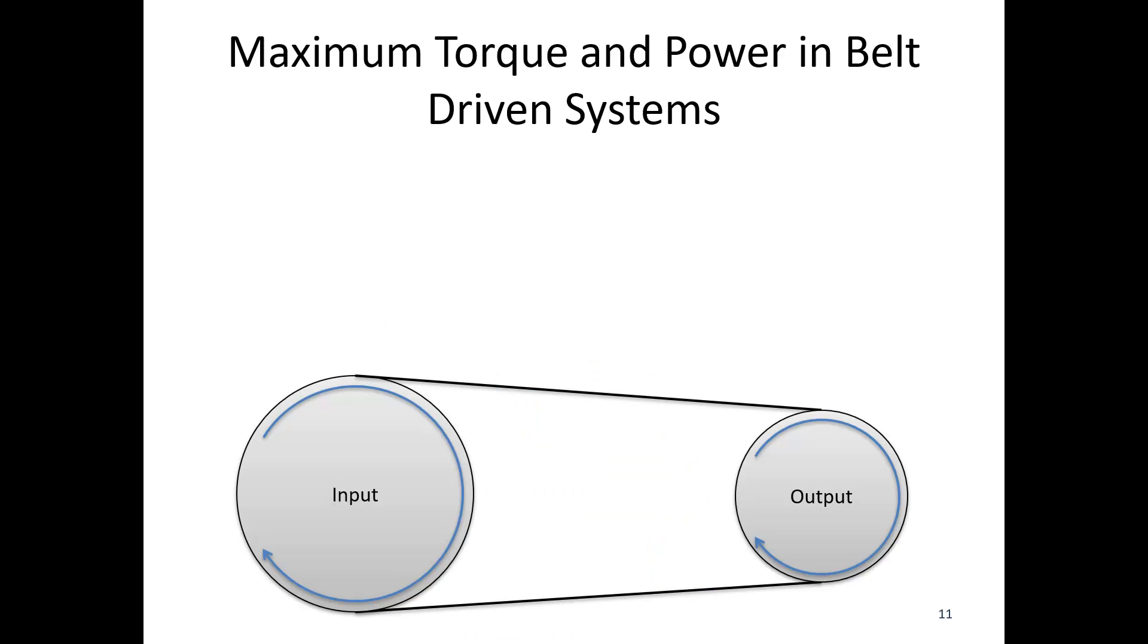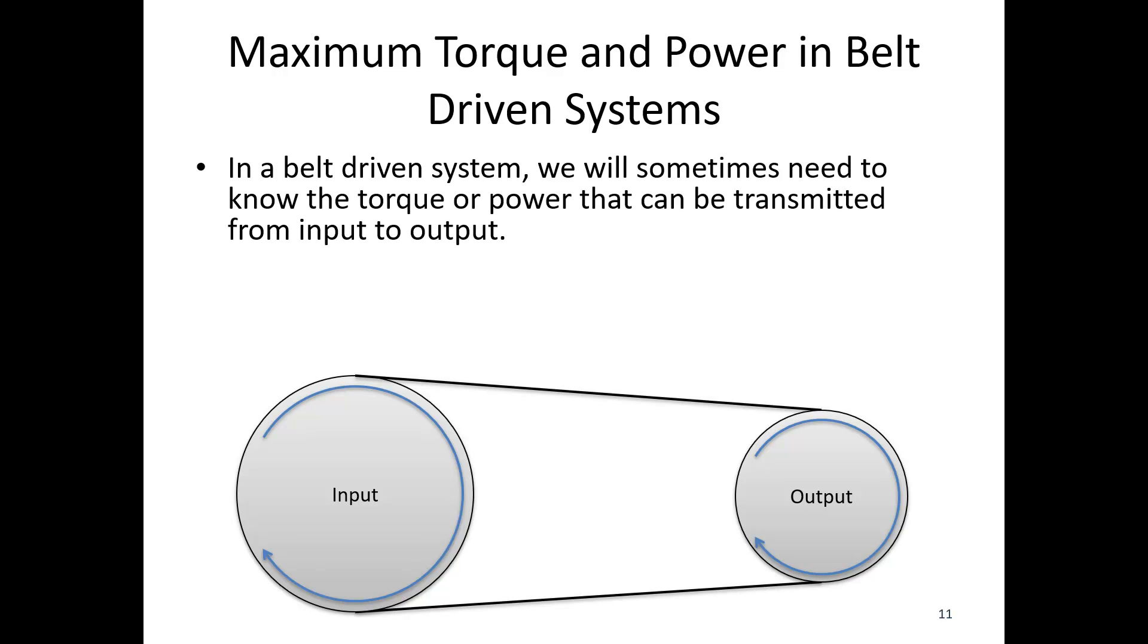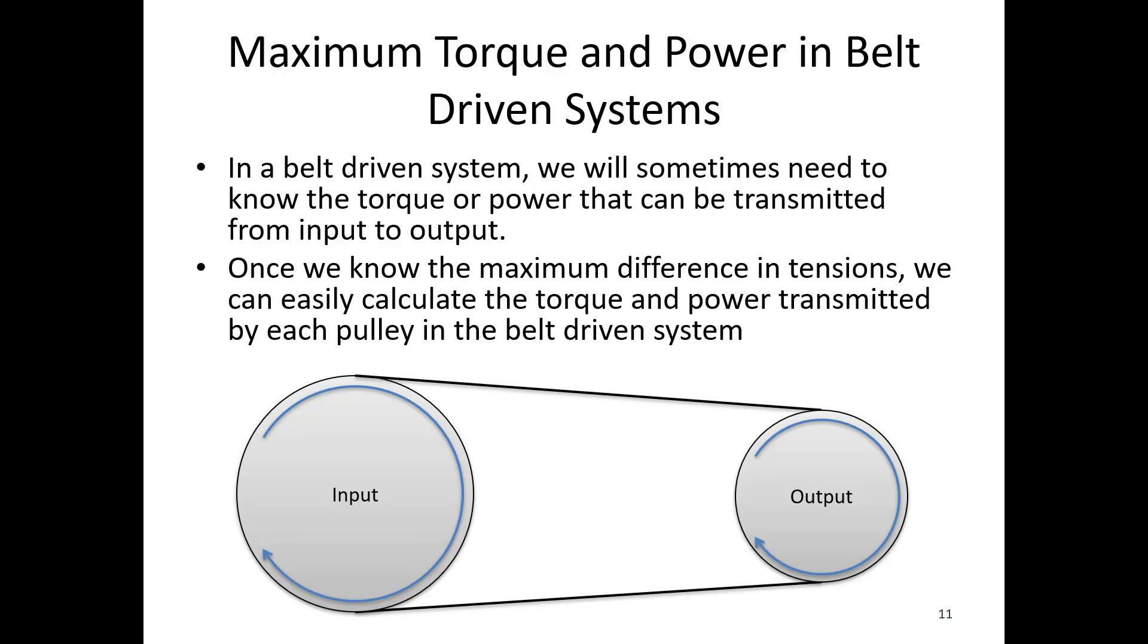Let's talk about maximum torque and power transfer in belt-driven systems. Sometimes we're sliding a rope across something, but in many cases we worry about belt friction because we've got some input driving some output pulley. I want to know how much torque I can put on the input, get on the output, and how much power I can transfer in the system.